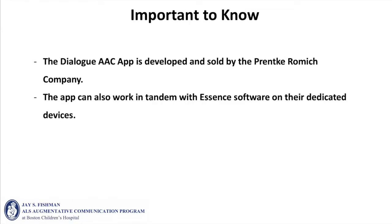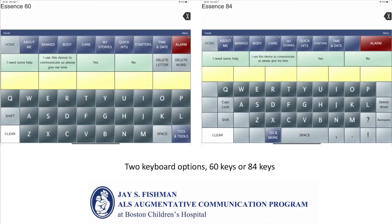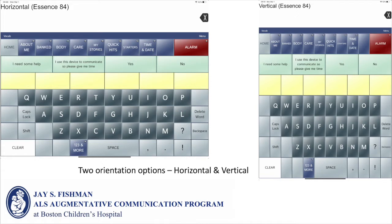The Dialog AAC app is developed and sold by the Pranky Romic company. In addition, the app can work in tandem with Essence software on their dedicated devices. The app has two available keyboard options: Essence 60 or Essence 84, with the number referencing the number of keys on the keyboard. The app can be used in both horizontal and vertical orientation.